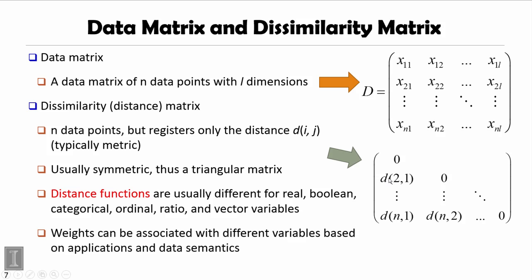But the distance function usually could be quite different for different kinds of variables, like real, boolean, categorical, ordinal, ratio, and vector variables. Their distance definition could be different. Moreover, sometimes they may have weights associated with those different variables based on the applications and data semantics.